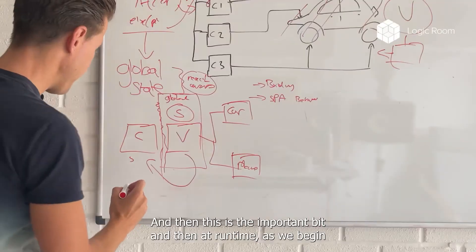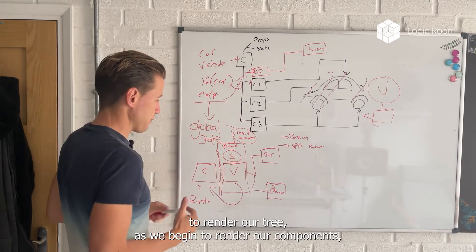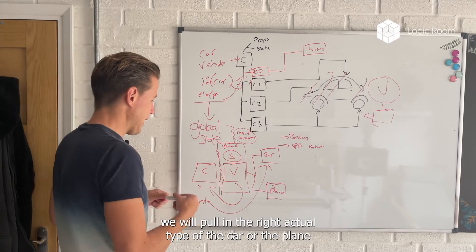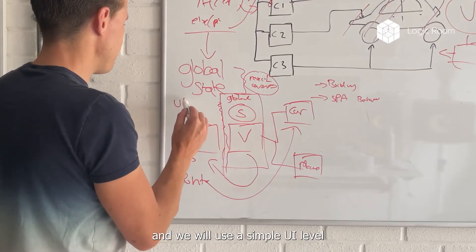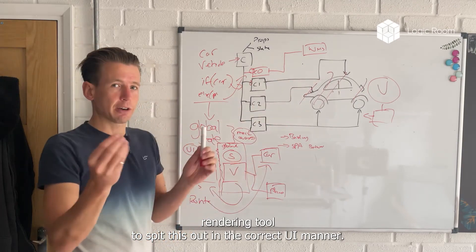What we want is our component layer to understand a vehicle, and that is represented as global state. And then, this is the important bit, at runtime, as we begin to render our tree, as we begin to render our components, we will pull in the right actual type, the car or the plane, and we will use a simple UI level rendering tool to spit this out in the correct UI manner.